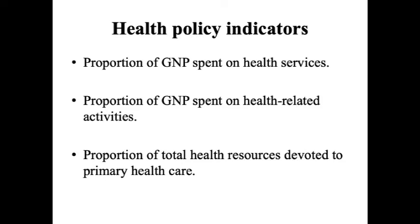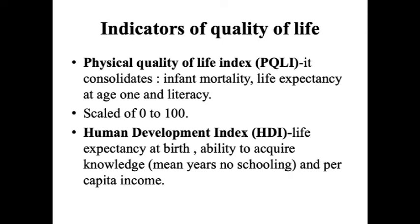Health policy indicators include the proportion of gross national product spent on health services, proportion of GNP spent on health-related activities, and proportion of total health resources devoted to primary health care. Quality of life indicators include the Physical Quality of Life Index (PQLI), which measures infant mortality, life expectancy at age 1, and literacy on a scale of 0 to 100, and the Human Development Index (HDI), which includes life expectancy at birth, ability to acquire knowledge (mean years of schooling), and per capita income.